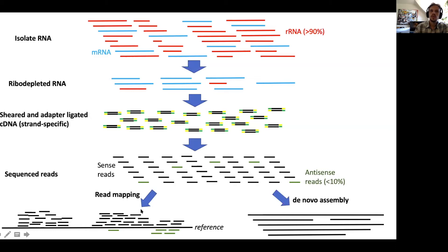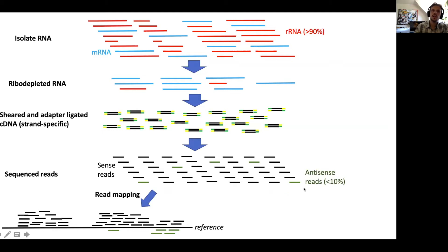There are two routes: read mapping or de novo assembly. Here I'm going to talk about not the read mapping itself, but what you do after the read mapping — basically counting the reads and estimating expression of various genomic regions, features, or genes.